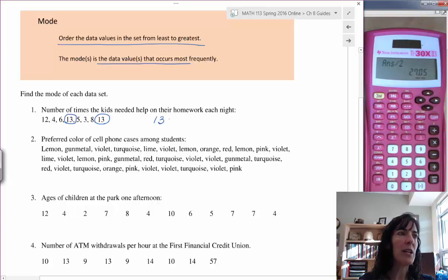So 13 is the mode for this first one, and this is the number of times kids needed help on their homework each night.